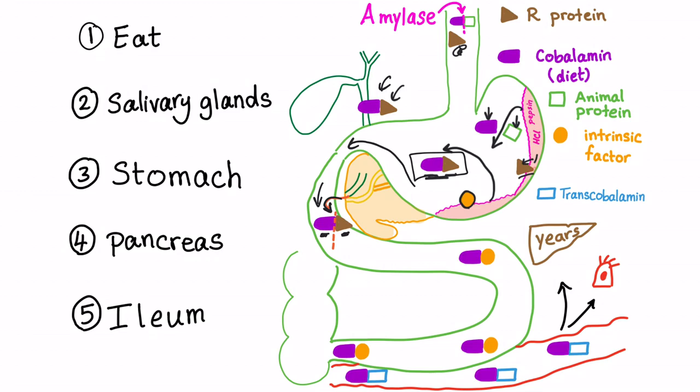Here we have the cobalamin and the R protein bound together. Why? To protect them from the gastric acid. But now we don't need the R protein anymore. So the pancreatic enzyme, not amylase, but protease, will destroy this relationship between them. So they will get divorced.